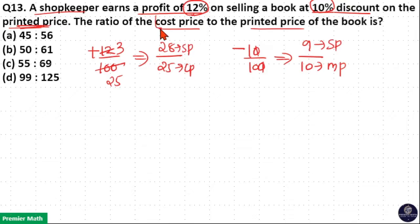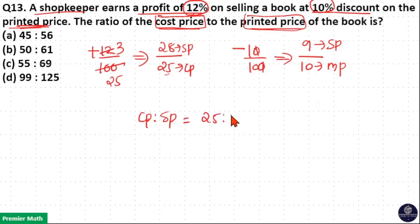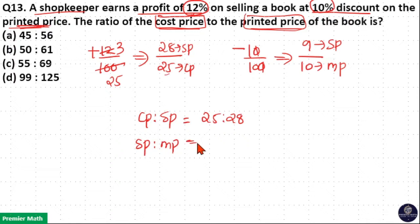Now we need to take the ratio of cost price to the printed price. First write the cost price: cost price to selling price is equal to 25 is to 28. Then take the ratio of selling price to mark price, which is 9 is to 10. We can cancel the selling price from both ratios.